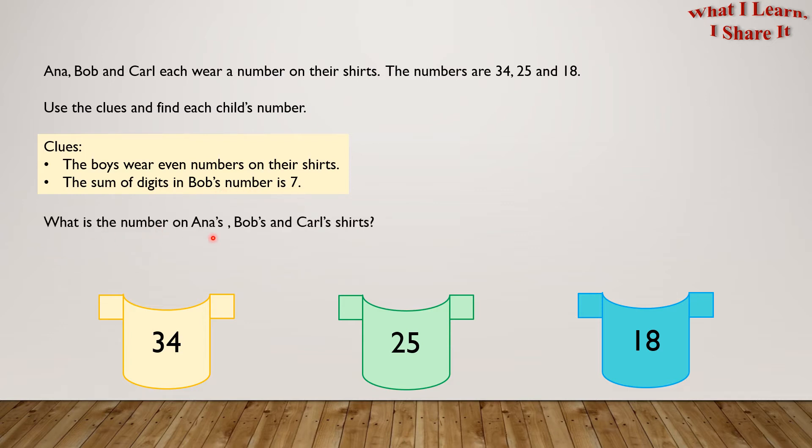What is the number on Anna's, Bob's, and Carl's shirts? So let's go to the first and second clues one by one.